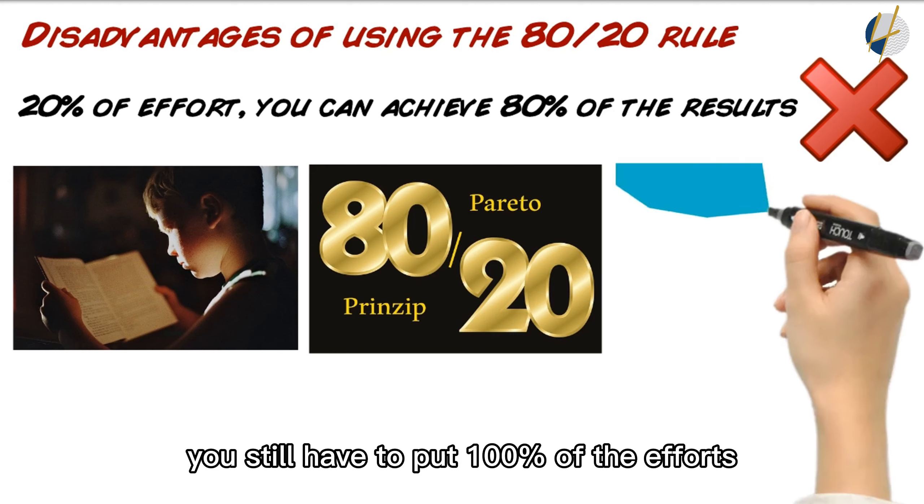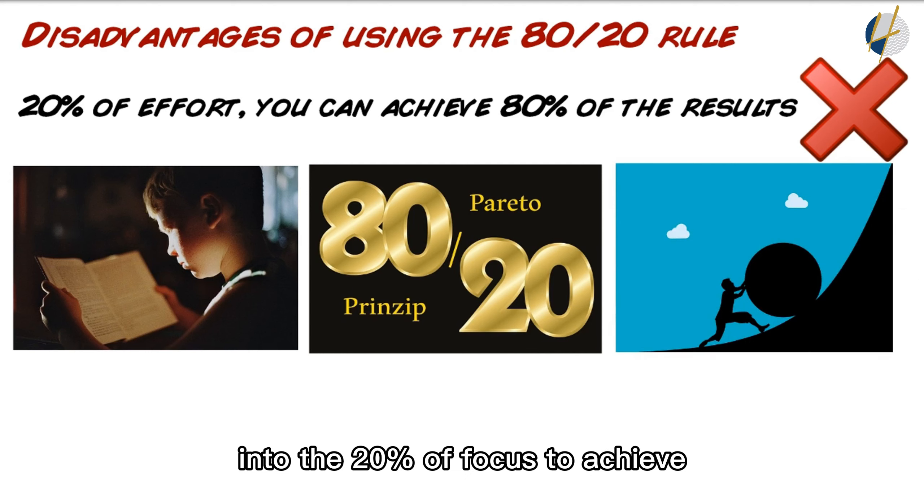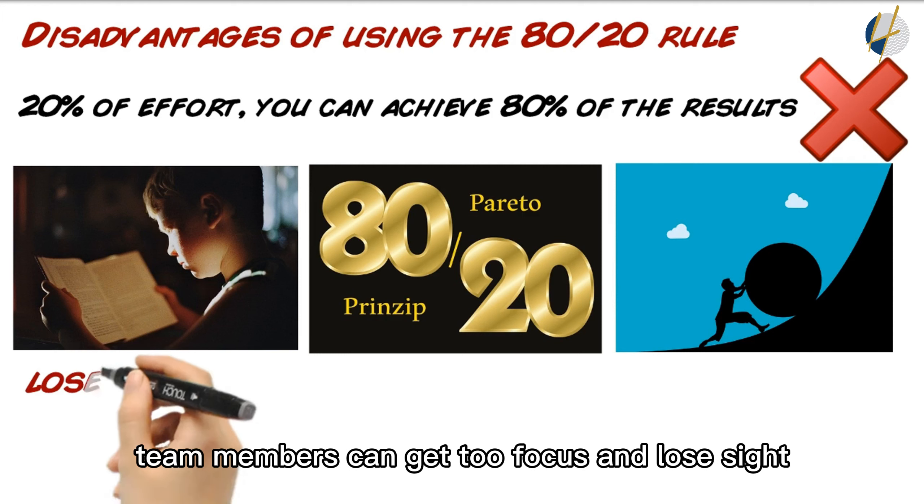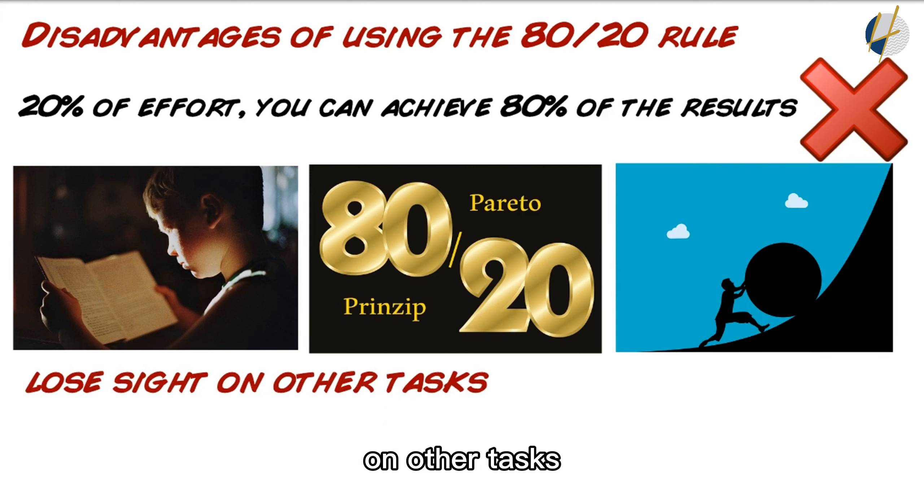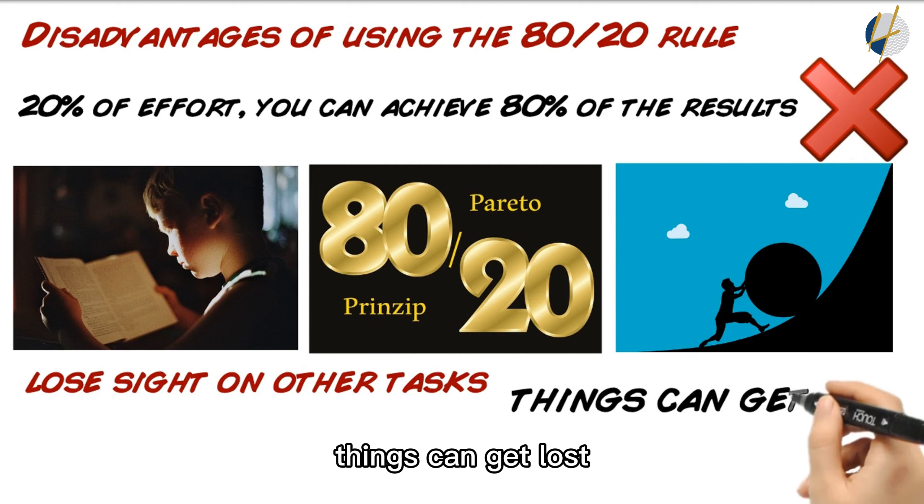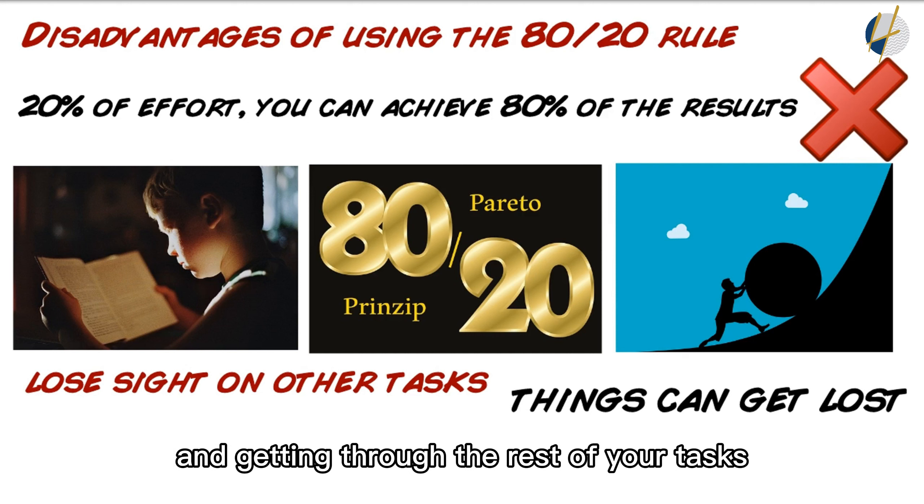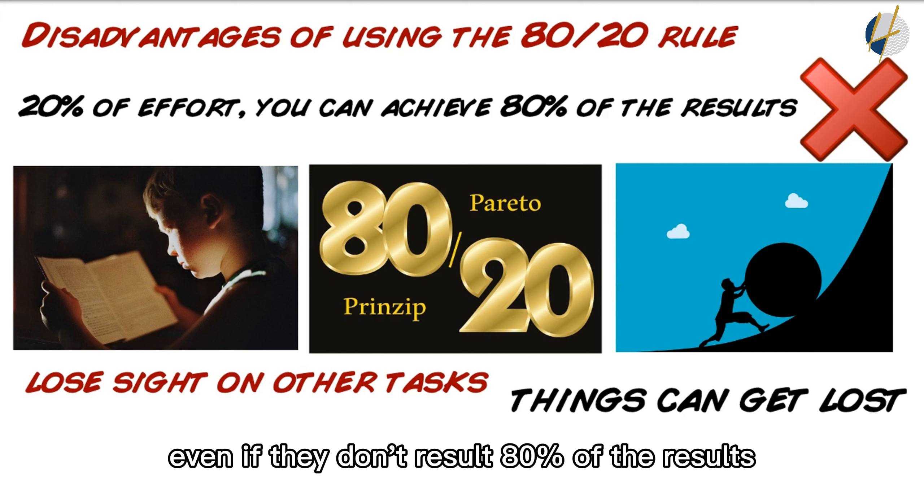You still have to put 100% of the effort into the 20% of focus to achieve 80% of the results. Another downside of the 80-20 rule is that sometimes team members can get too focused and lose sight of other tasks. If you only focus on important tasks and put aside less important tasks like email and other correspondence, things can get lost. The challenge is finding the right balance of using the 80-20 rule and getting through the rest of your tasks, even if they don't resolve 80% of the results.